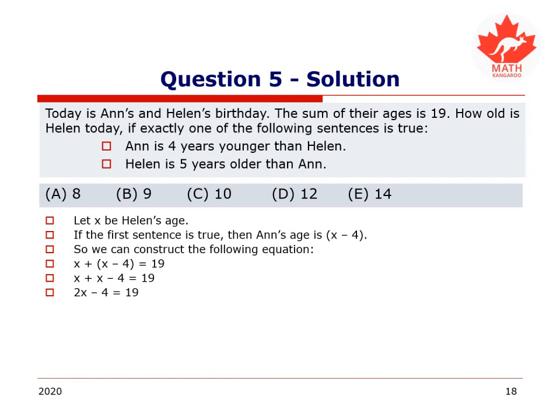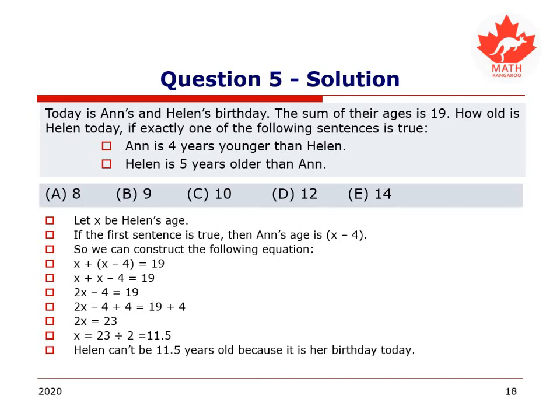Meaning that 2x minus 4 would have to be 19. The brackets were not doing anything for us there. Meaning that 2x minus 4 plus 4, which is 2x, is the same thing as 19 plus 4, which is 23. 2x equals 23, which would mean that x is 23 divided by 2, which is 11 and a half. This is contradicting our statement, because today is Helen's birthday. She can't be 11 and a half years old on her birthday. She has to be a whole number of years old. So the first sentence cannot be true. Statement is false.